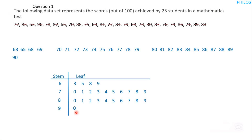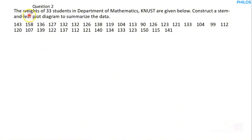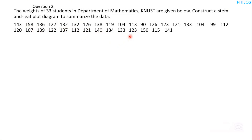Question 2: the weights of 33 students in the Department of Mathematics at USP are given. Construct a stem and leaf plot to summarize the data. The lowest data value is 90 and the highest is 158, so we'll have values in the 90s, 100s, 110s, 120s, 130s, 140s, and 150s.